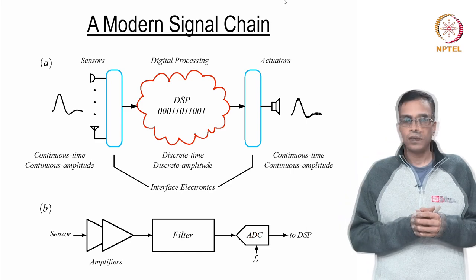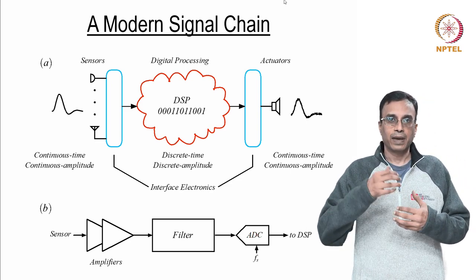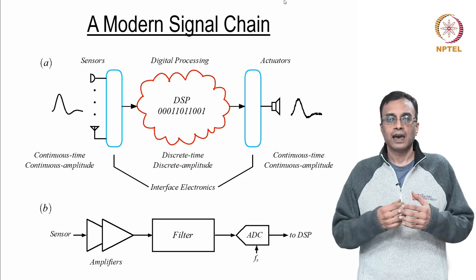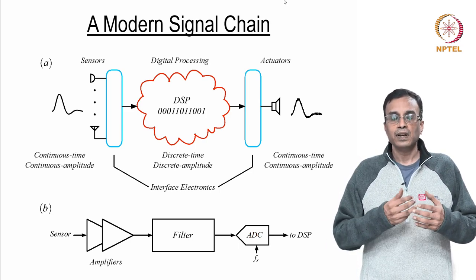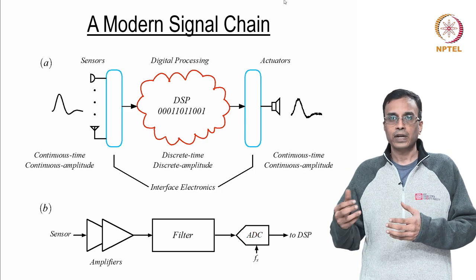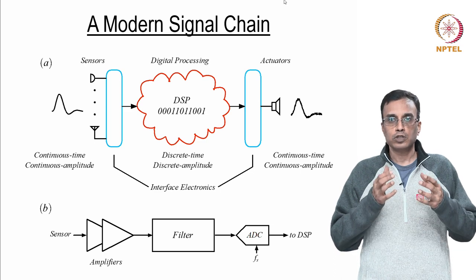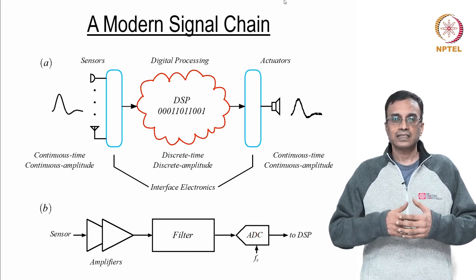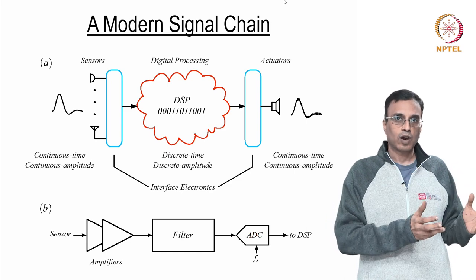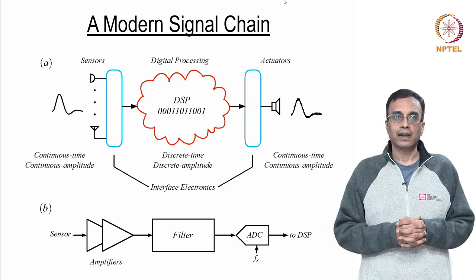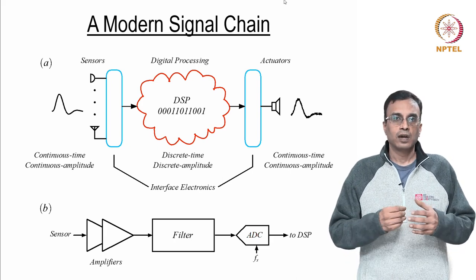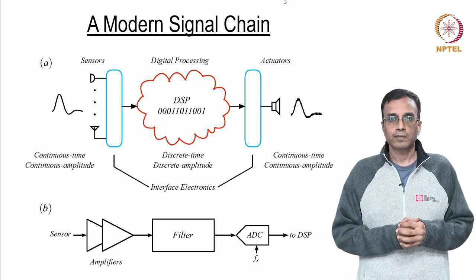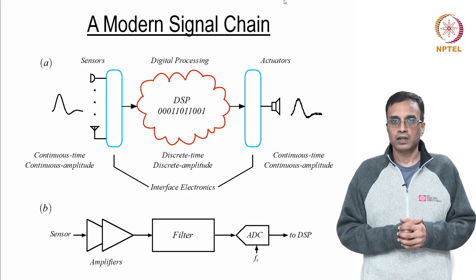How does that interface circuitry look? You need amplifiers to take small signals and make them larger. You need filters to remove interference and noise. And you need analog to digital converters that convert the filtered signal into digital form. On the actuator front, the discrete time and amplitude signal produced by the DSP has to be converted into a signal that is continuous in time and amplitude — done by going in reverse: a digital to analog converter, a smoothing filter, and driver amplifiers. The job of an analog circuit or IC designer is to design these blocks and engineer these systems as efficiently as possible.